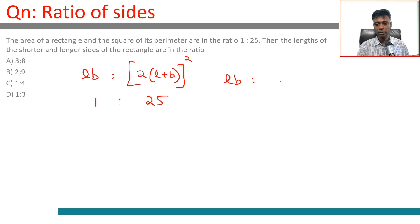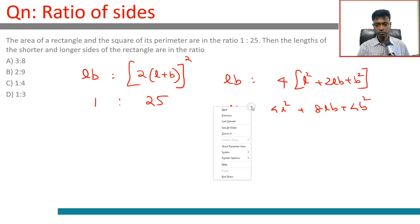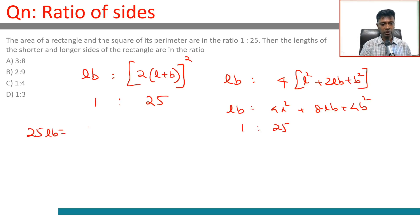L into B is to 4 times L square plus 2LB plus B square is 1 is to 25, or LB is to 4L square plus 8LB plus 4B square is 1 is to 25, or 25LB equals 4L square plus 8LB plus 4B square.